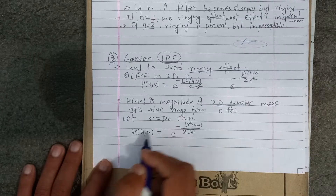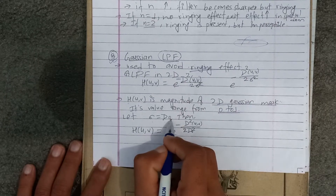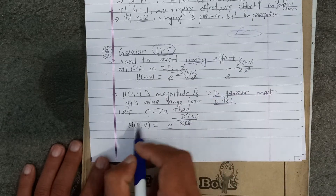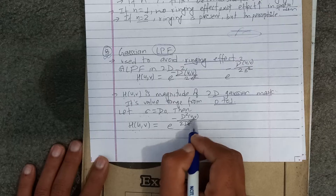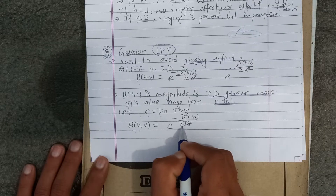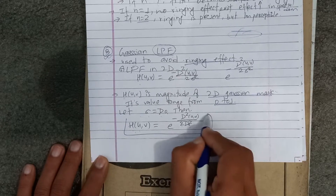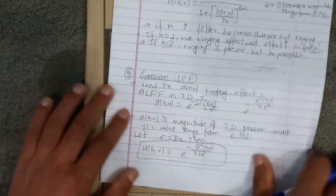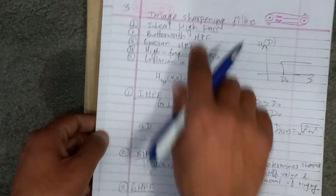Its value ranges from 0 to 1. Here we are using the Gaussian low-pass filter, and now we are moving on to the image sharpening filter.